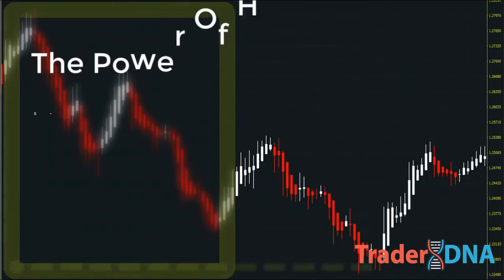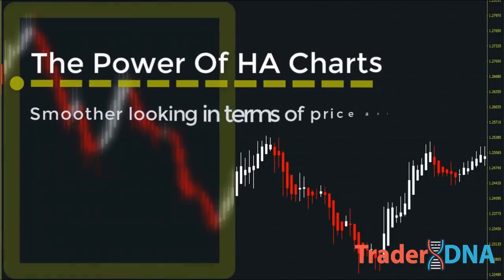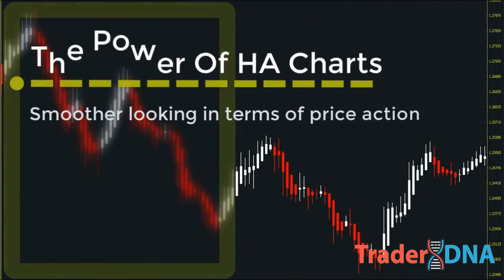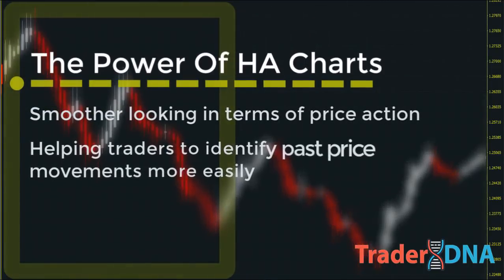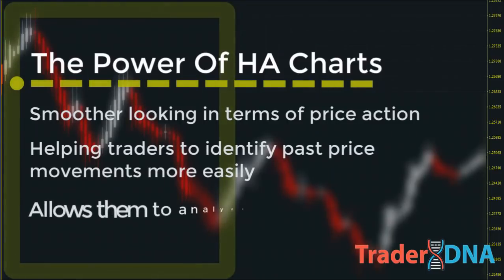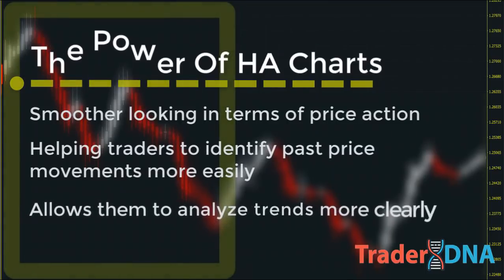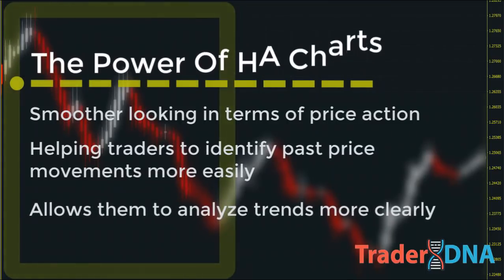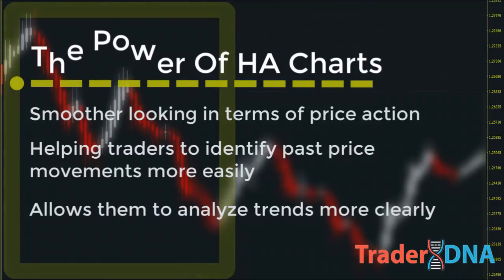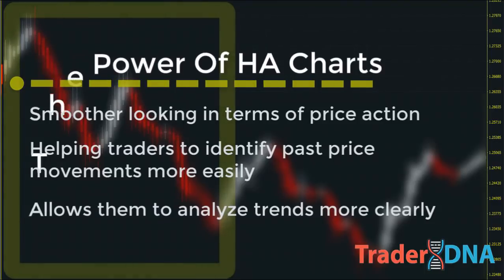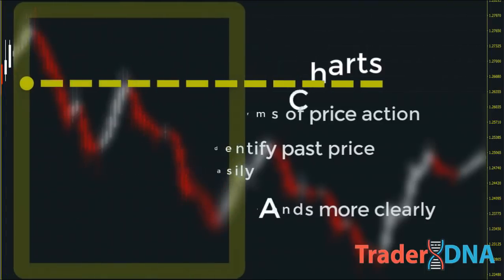You'll notice that Heikin Ashi charts have a tendency for its candles to stay white during an uptrend and stay red during a downtrend. This is in contrast to traditional Japanese candlesticks that alternate color, even if the price is moving strongly in one direction. Heikin Ashi is much smoother looking in terms of price action, helping traders to identify past price movements more easily. This is why many traders prefer to use Heikin Ashi candles, since it reduces the noise on the chart and allows them to analyze trends more clearly.